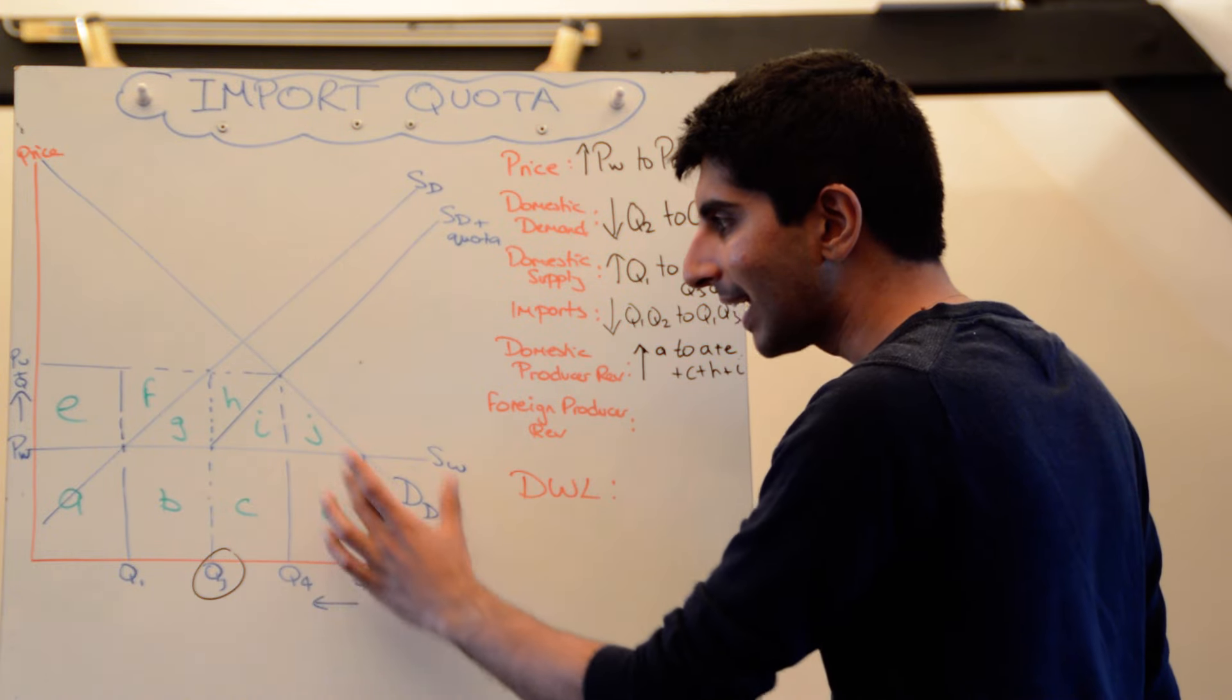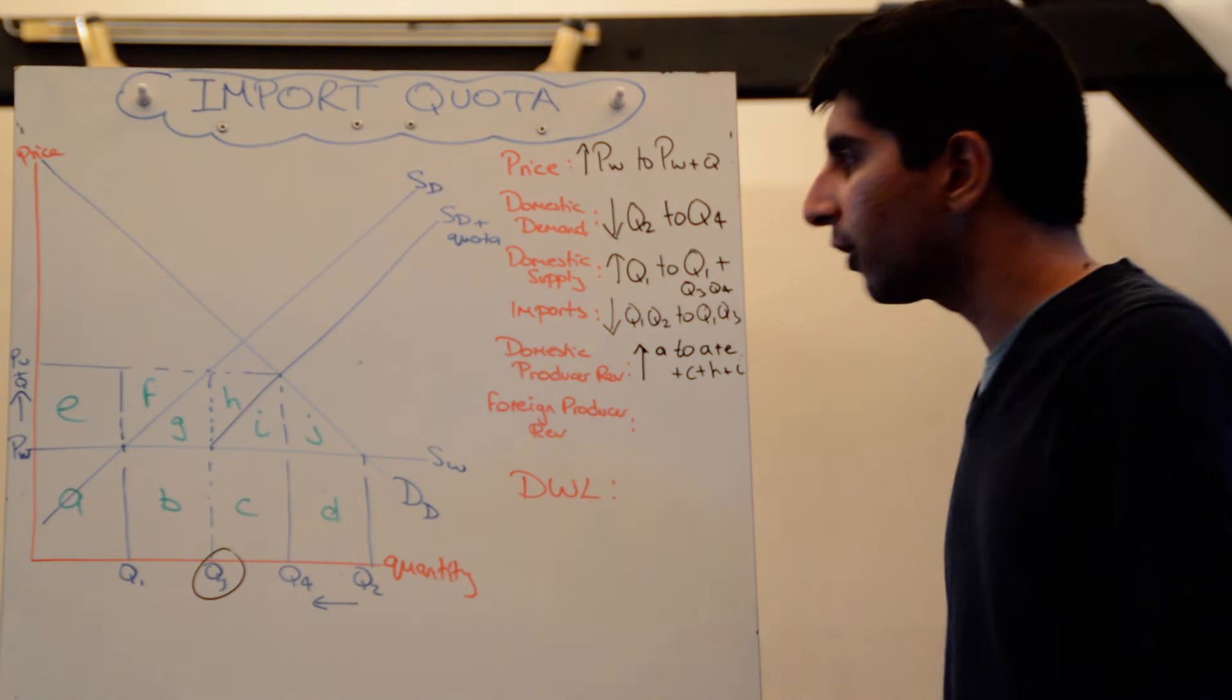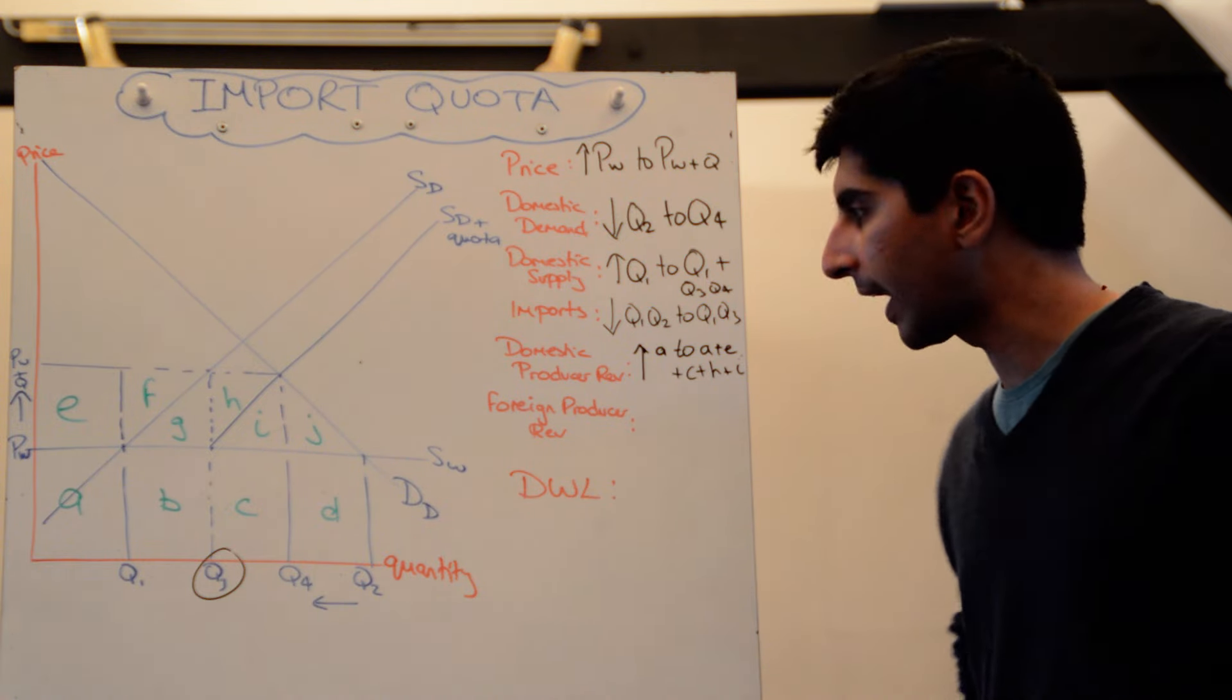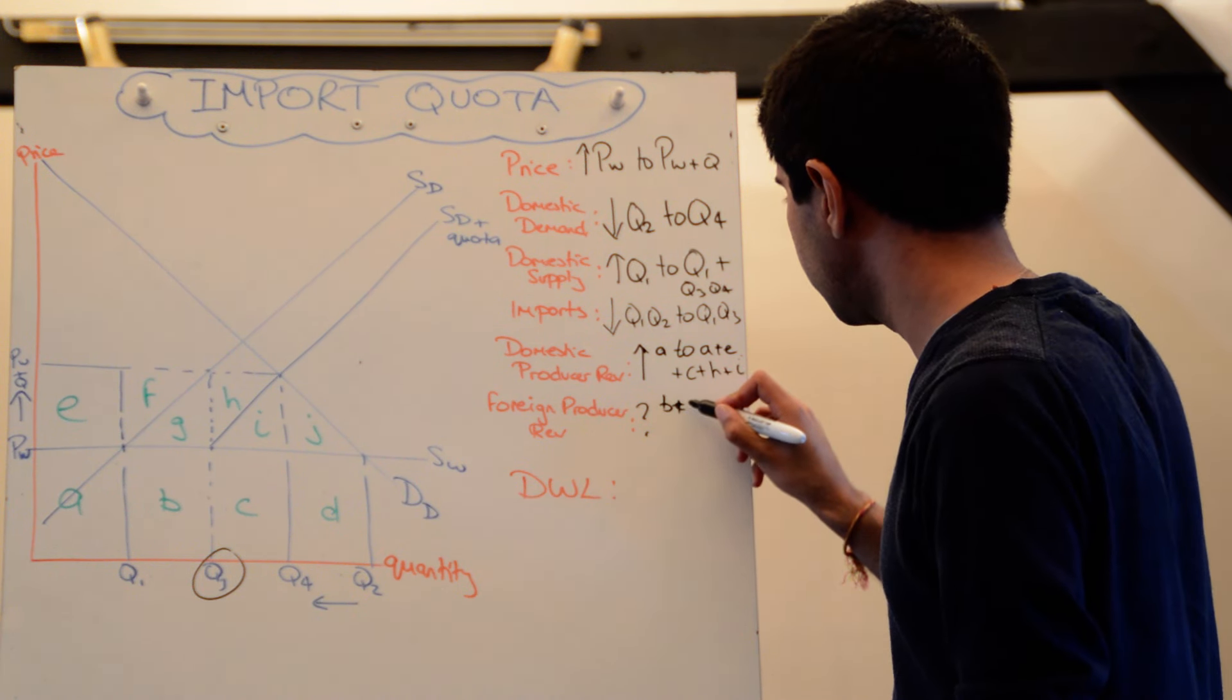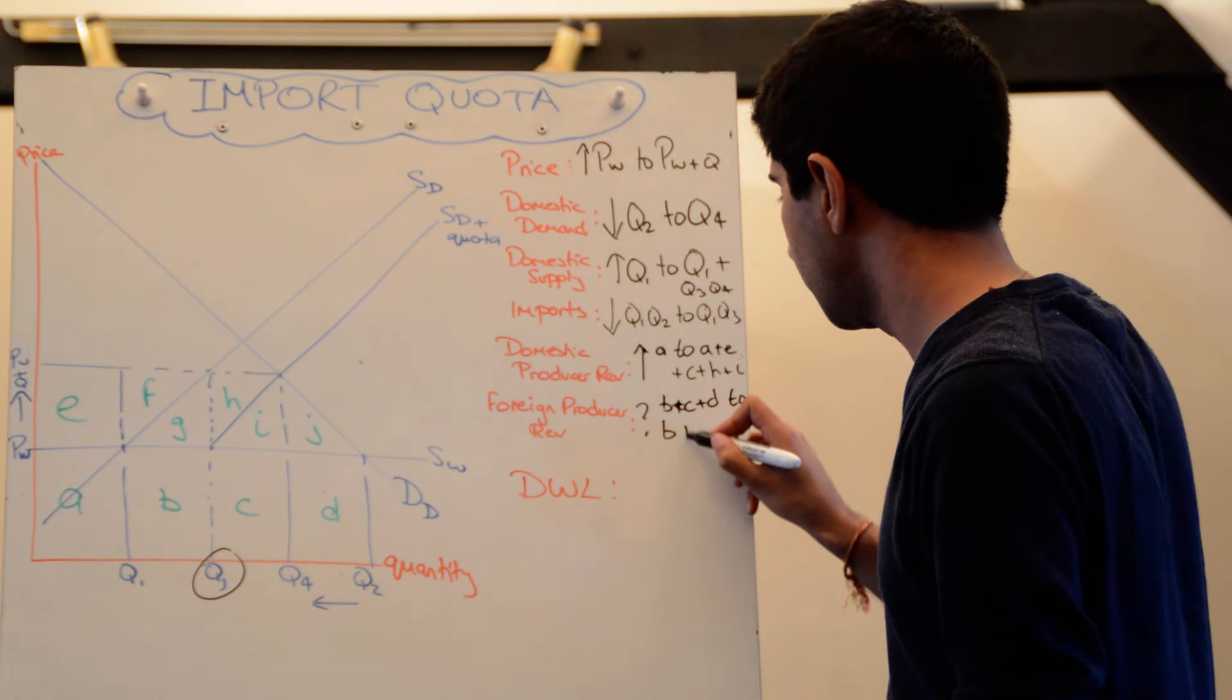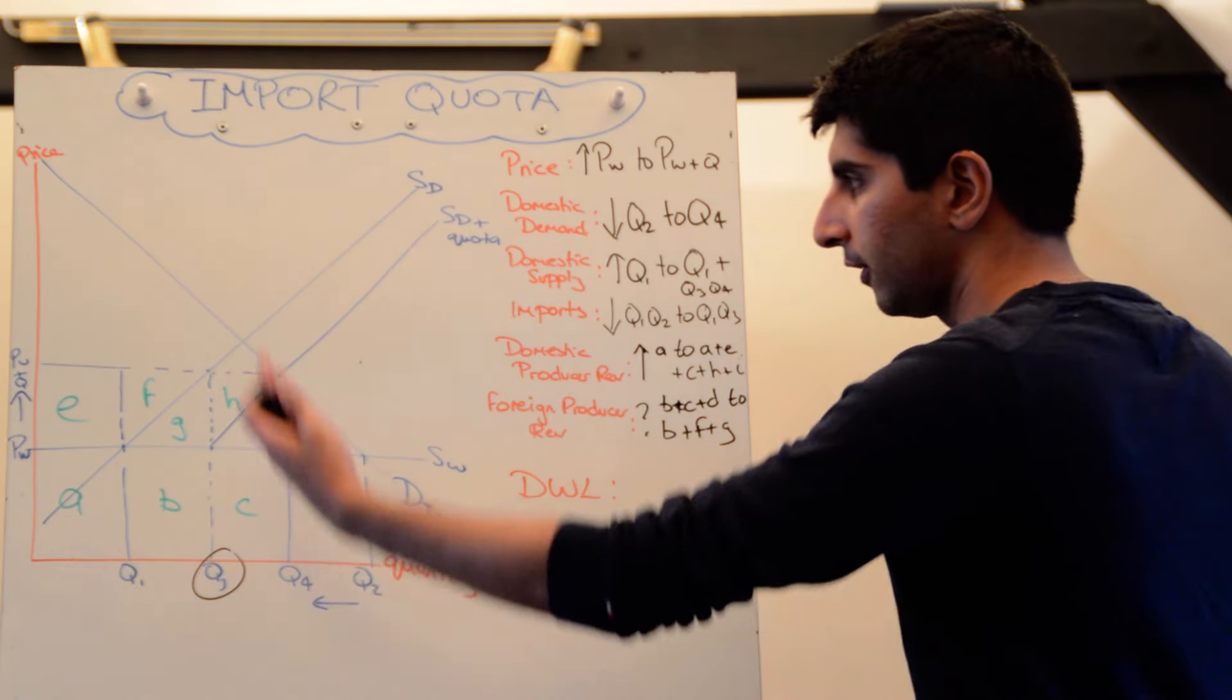So from B, C and D to now B, F and G. Quantity times the price they're getting. So it's hard to know what's happened to revenue. We need actual figures to work that out. So we put a question mark. But what we can say is that it's gone from B plus C plus D to now B plus F plus G. Whether that's an increase or a decrease in revenue depends on the figures on the axis here.